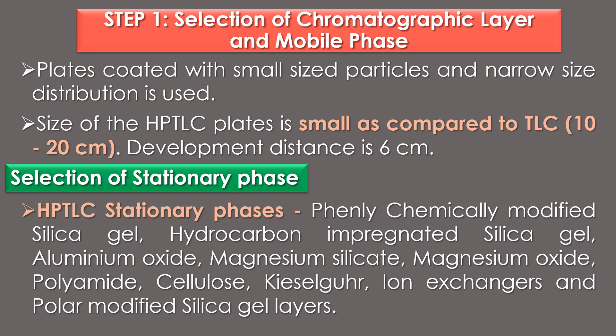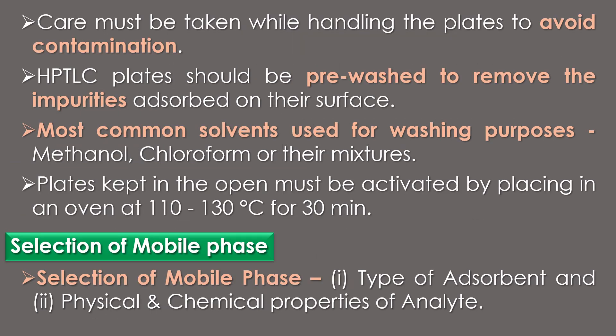The selection of the HPTLC stationary phase is based upon the type of analyte. The most common HPTLC stationary phases are: phenyl chemically modified silica gel, hydrocarbon impregnated silica gel, aluminium oxide, magnesium silicate, magnesium oxide, polyamide, cellulose, and polar modified silica gel layers that contain amino, cyanide, diol and thiol groups. Care must be taken while handling the plates to avoid contamination.